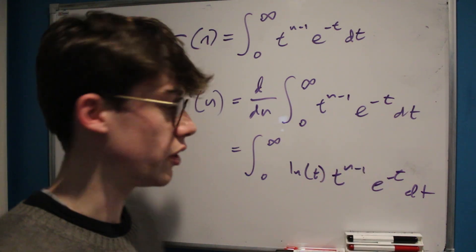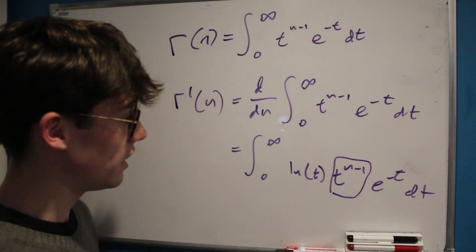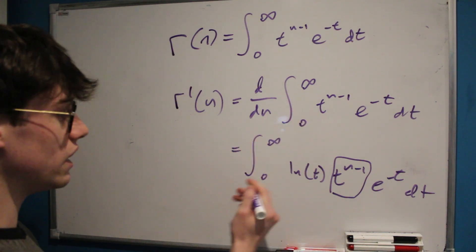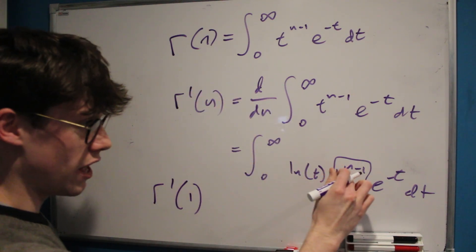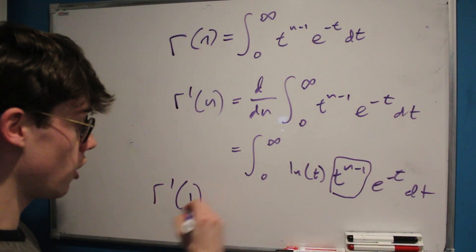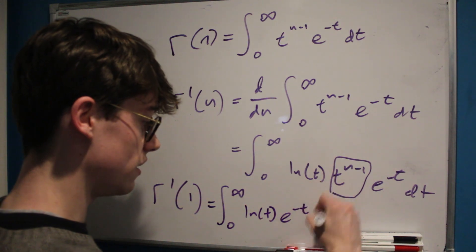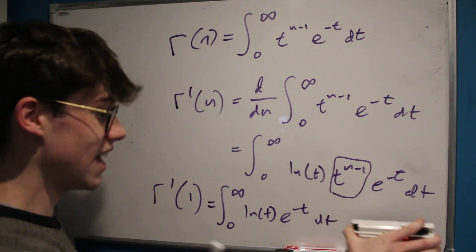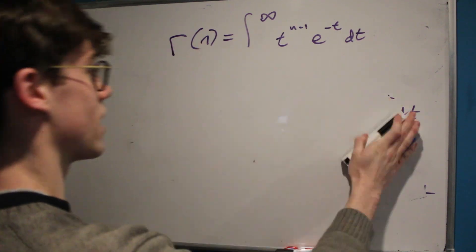This is very close to what we're looking for, but it still has the t to the n minus one term. So we want to set n to something that eliminates this. If we evaluate gamma prime of n at n equals one, then our power is one minus one which is zero, and anything to the power of zero is one. That means gamma prime of one equals the integral from zero to infinity of the natural log of t times e to the negative t, with respect to t — and that exactly is the integral we were looking for. So all we have to do is work out gamma prime of one.